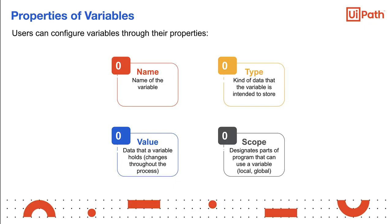Value is the data that a variable holds. The value of a variable changes throughout the process. Suppose a variable named tasks is assigned the value 12 initially. At another point, tasks may be assigned the value 27. If no initial value is assigned at the creation of the variable, a default rule assigns a value to that variable.